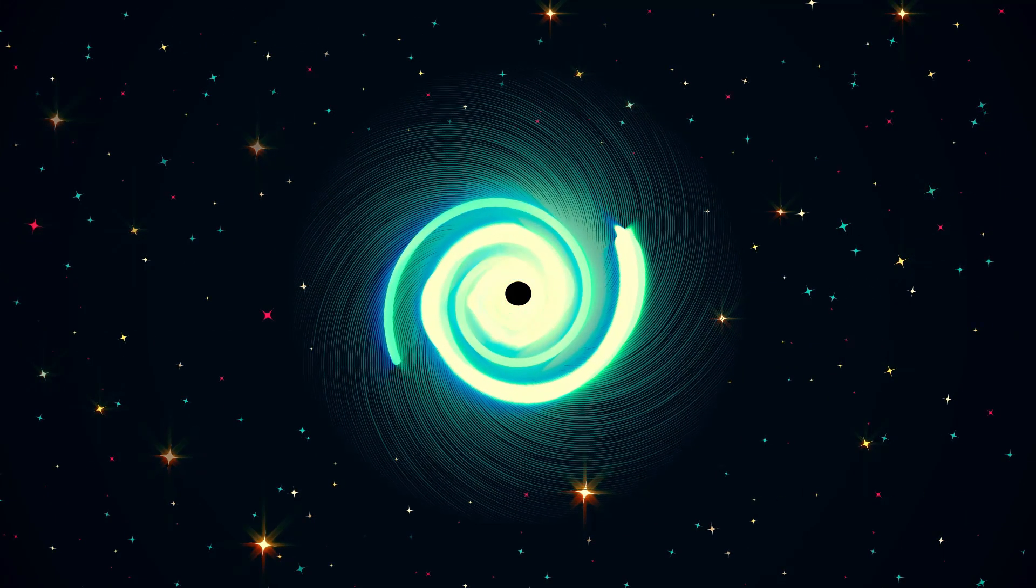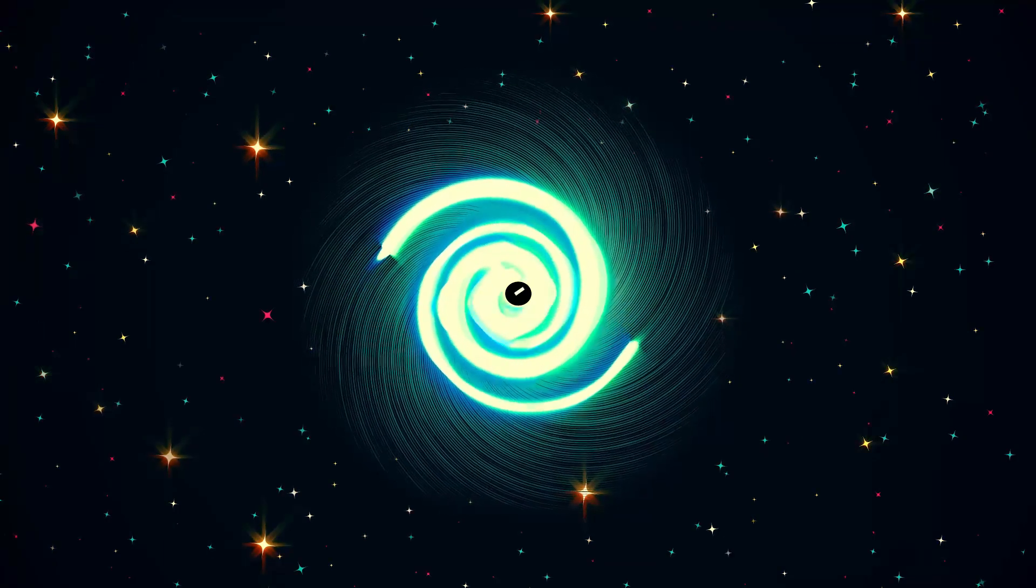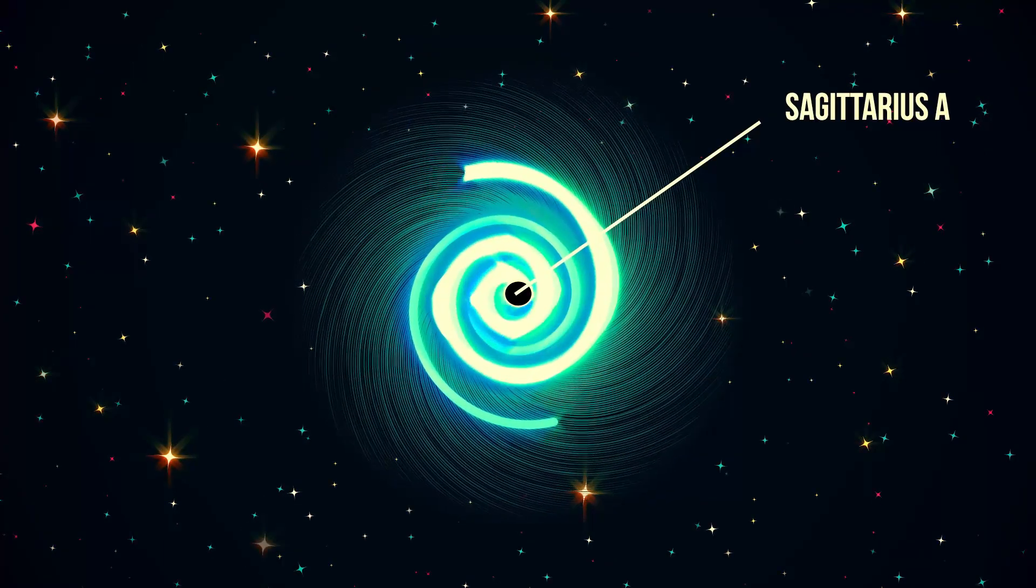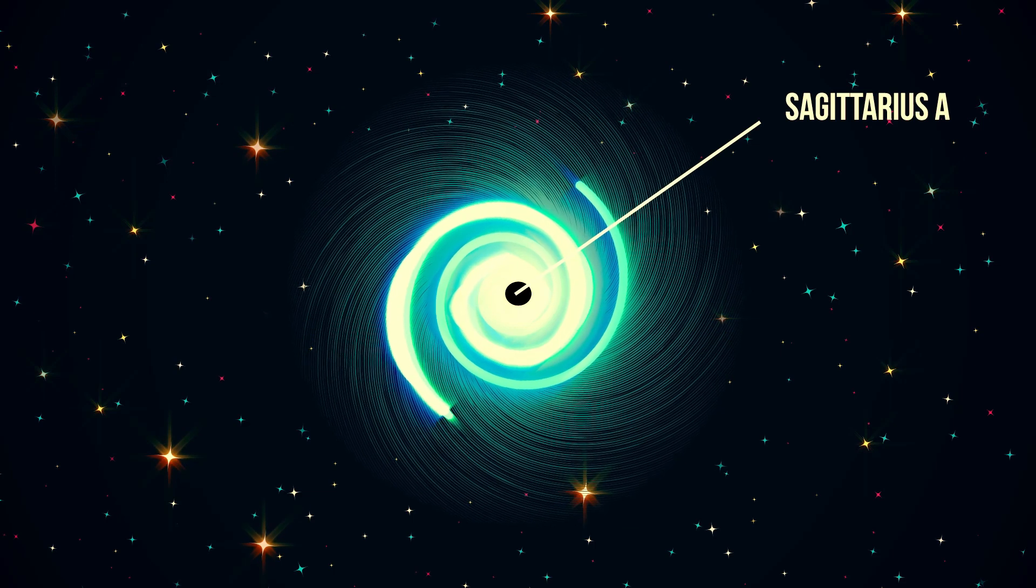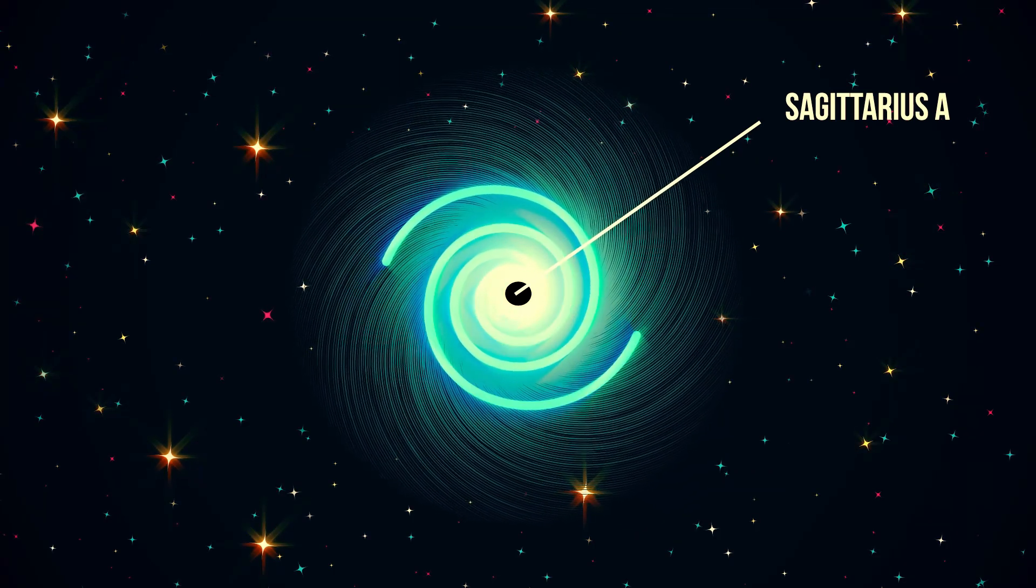At the center of most galaxies, you will find supermassive black holes. The Milky Way is no exception. Called Sagittarius A, this supermassive black hole lies hidden in the shadows of the galaxy's central core.